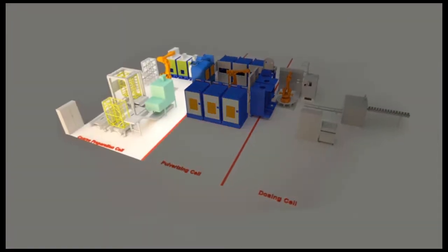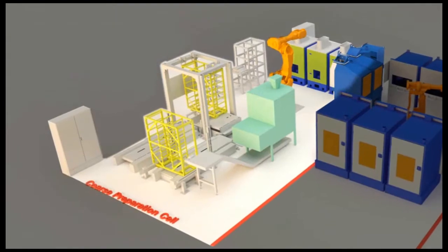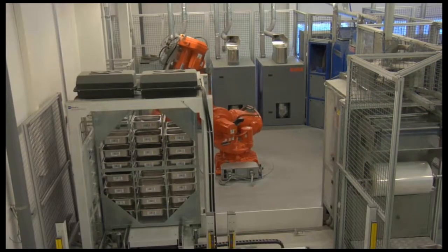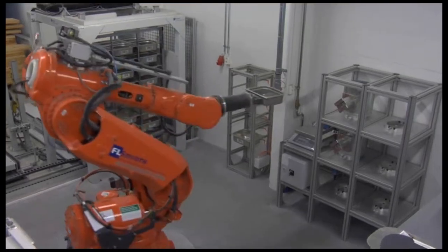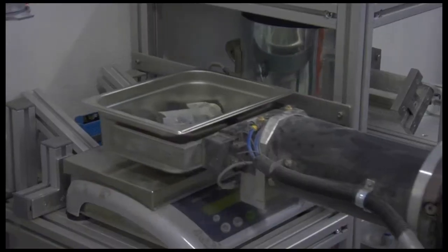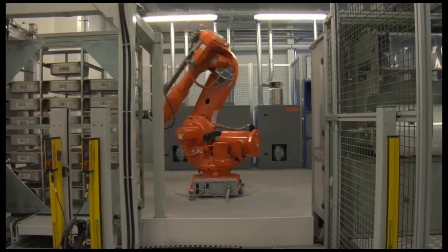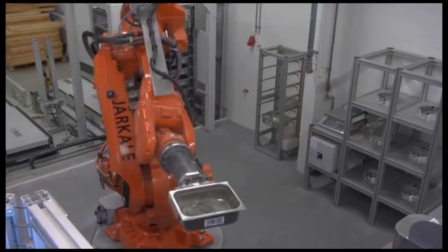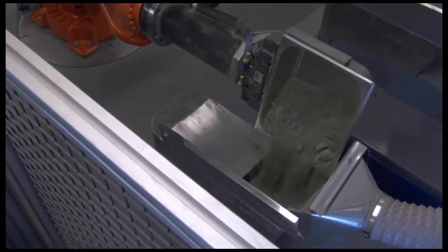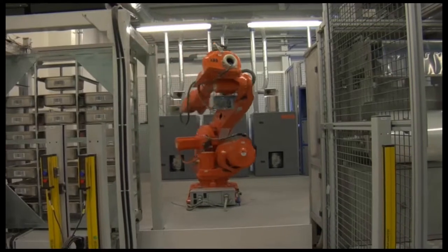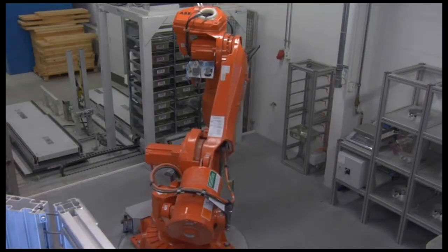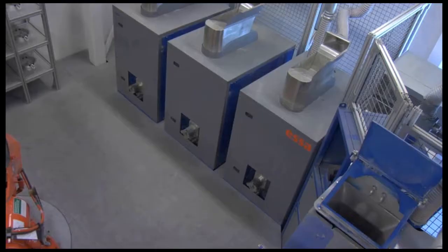The first cell is the coarse preparation cell. Here, the samples are again weighed, and original moisture content is registered. Then the sample is crushed in one of the three large jaw crushers. The crusher output weight is used by the QCX software to determine possible sample blockings.